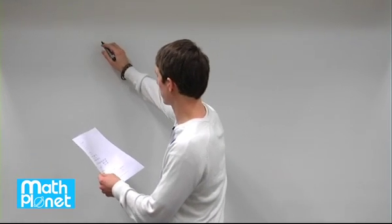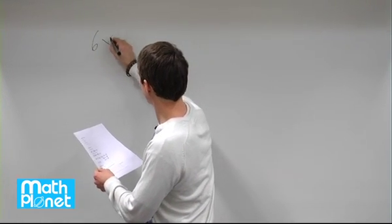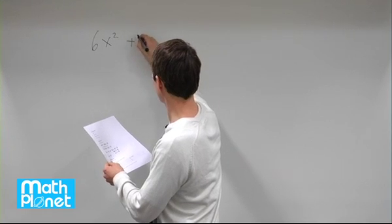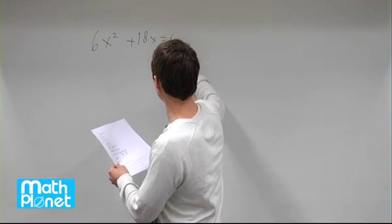Here we have an algebraic equation that we want to solve: 6x squared plus 18x equals zero.